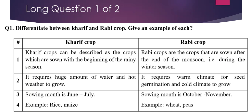Kharif crops require a huge amount of water and hot weather to grow. The sowing month is June and July. For example, rice and maize. Rabi crops require warm climate for seed germination and cold climate to grow. The sowing month is October and November. For example, wheat and peas.